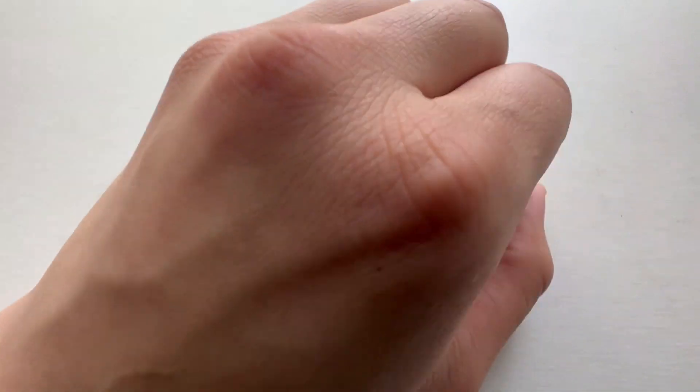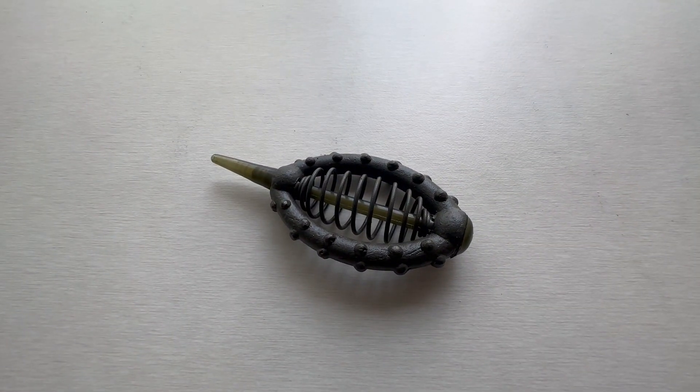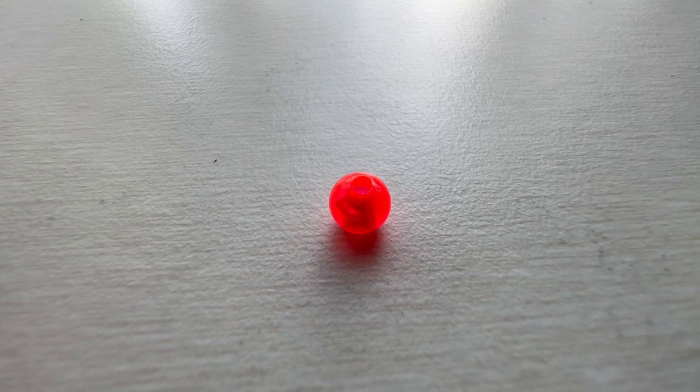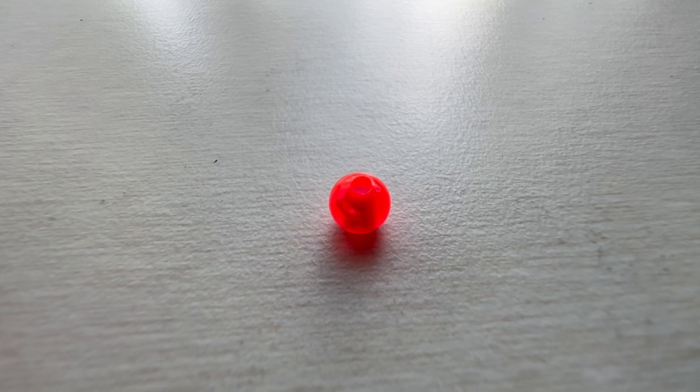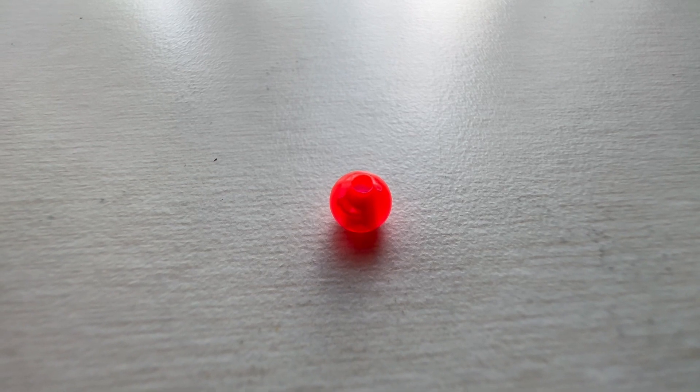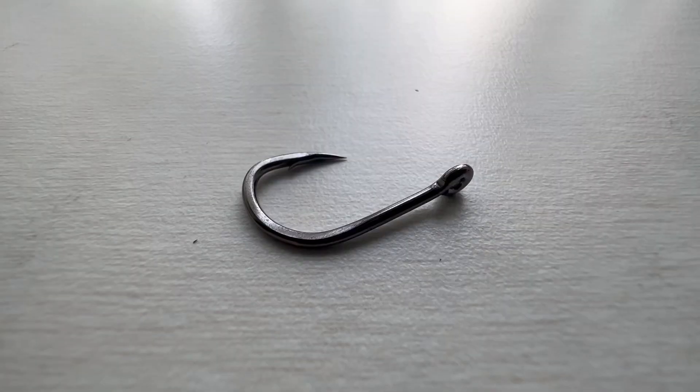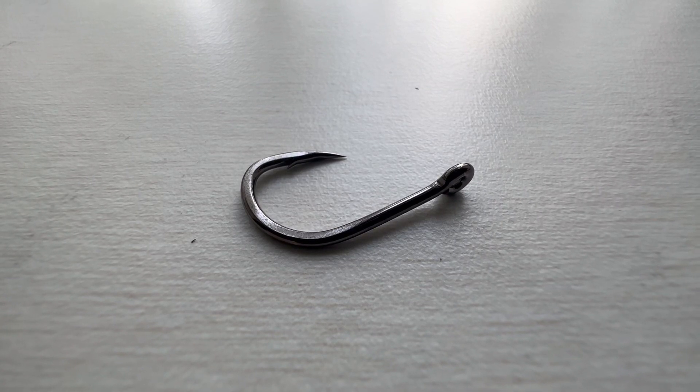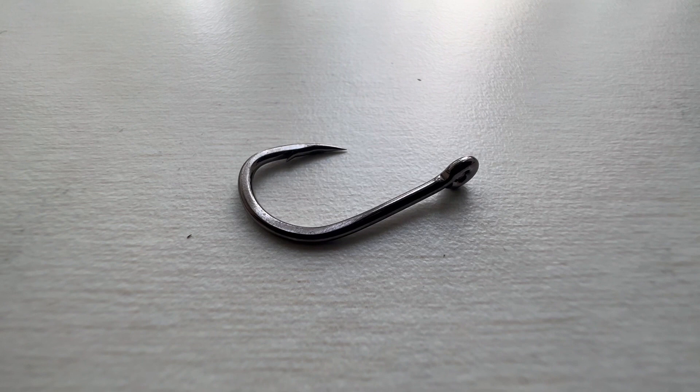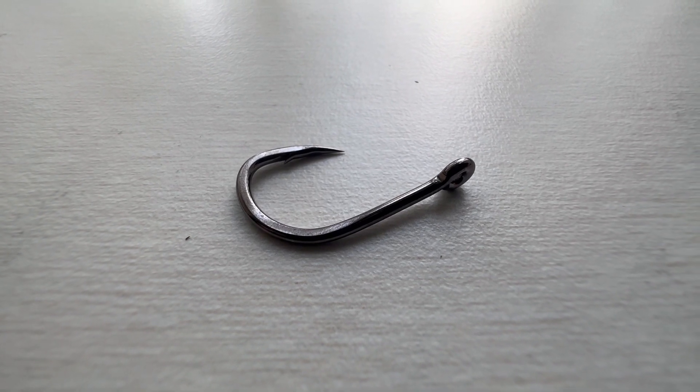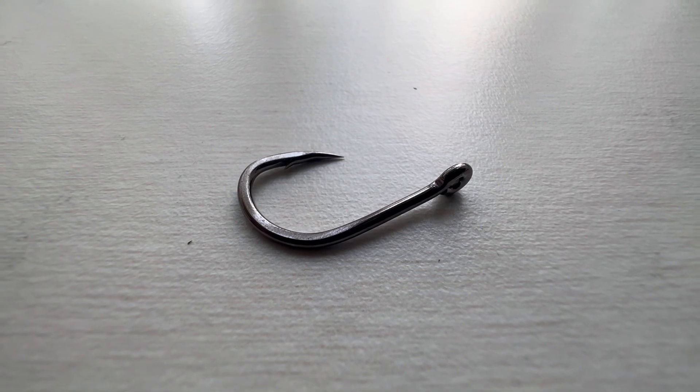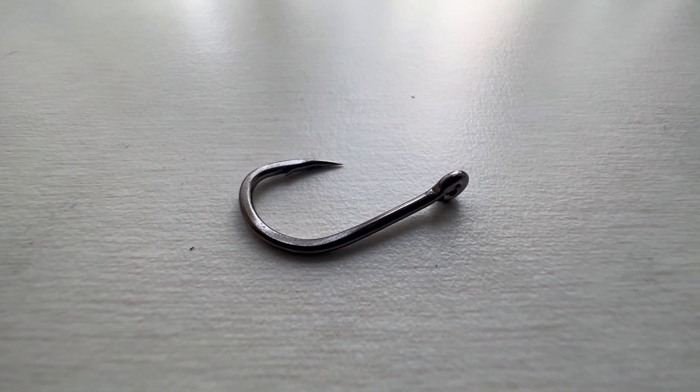The second component is a bead. You can use bigger ones or smaller ones, it doesn't matter. You just want to stop the method feeder from hitting the hook. For the third component we have a small hook. Usually you can go even smaller than this, but this is a pretty good size for the bigger carp from 20 pounds to 50 pounds because of how their mouth is shaped.